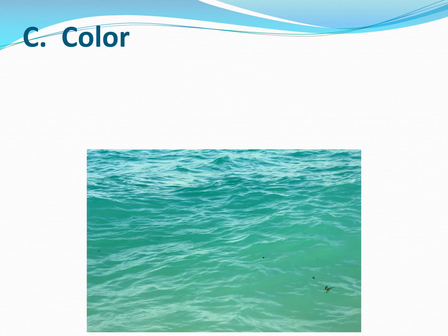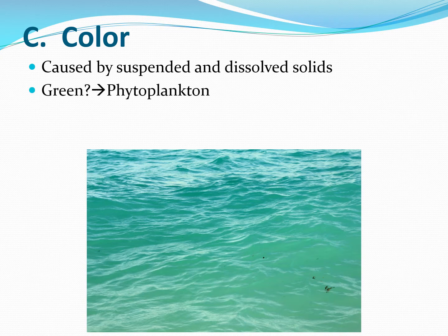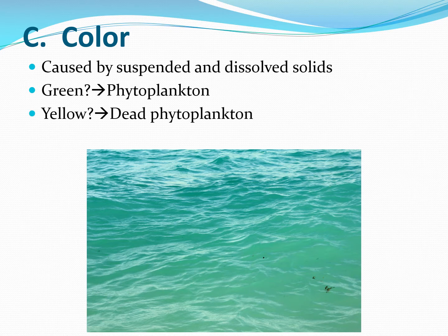Color is another thing to look at. It's caused by suspended and dissolved solids. If the water is green, you probably have phytoplankton in that lake. If it turns a yellowish color, you might have dead phytoplankton. And if it's brown, you probably have suspended clays, likely from rain events bringing in clay through erosion.